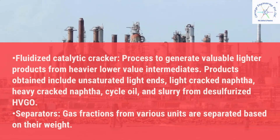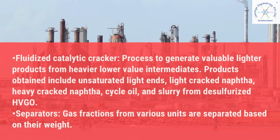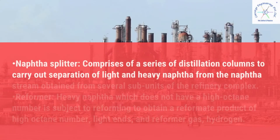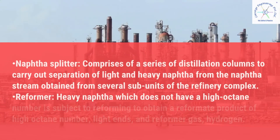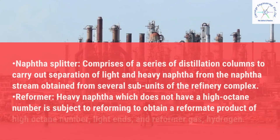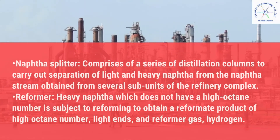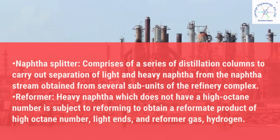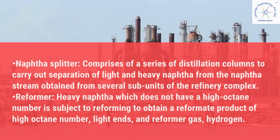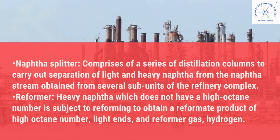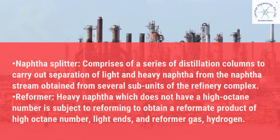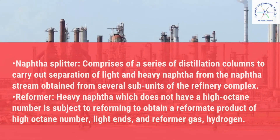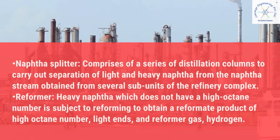Separators: gas fractions from various units are separated based on their weight. Naphtha splitter comprises a series of distillation columns to carry out separation of light and heavy naphtha from the naphtha stream obtained from several subunits of the refinery complex. Reformer: heavy naphtha which does not have a high octane number is subjected to reforming to obtain a reformate product of high octane number, light ends, and reformer gas hydrogen.